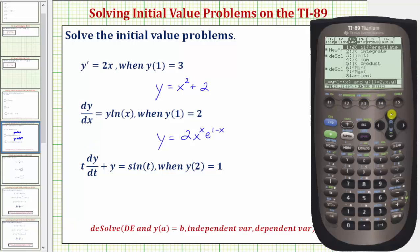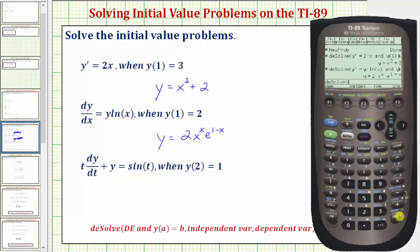So we'll press F3 up enter. So we have t times dy dx is still y prime so y second equal sign plus y equals sine t. Sine t is second to y. T close parenthesis.